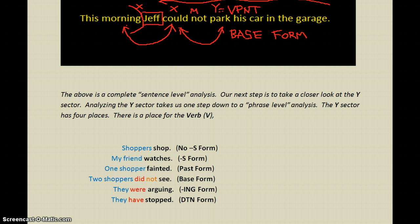'And they have stopped.' They is the subject; have is the X-word; stopped is the DTN form. Basically what we're saying is that in the Y, the first place we have is a place to put the verb, and all six different verb forms can go in there.